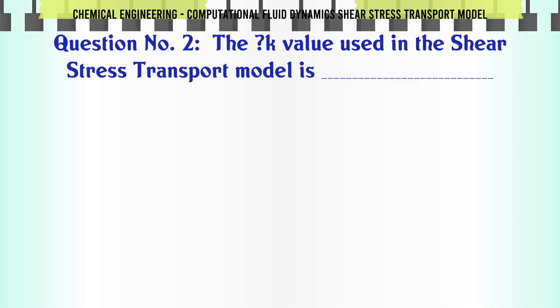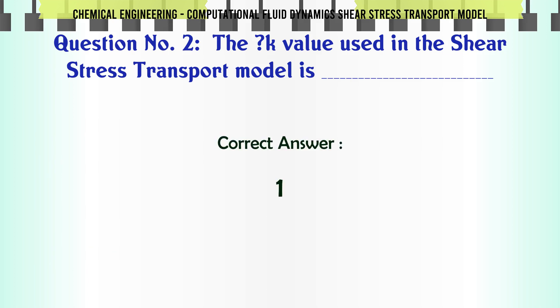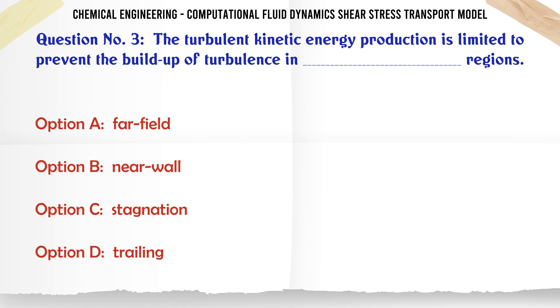The K value used in the shear stress transport model is: A) 1 — B) 1 — C) 2 — D) 2. The correct answer is 1. The turbulent kinetic energy production is limited to prevent the build-up of turbulence in regions: